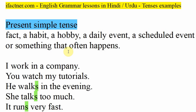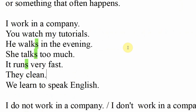Toh ab hum dekhtae hain kuch simple iske rules joh hum present simple tense ke liye use kertae hain. Present simple tense ek asaan tense hai - ismein verb ki aap first form use kertae hain. I, you, they, you people, we ke saad hum verb ki first form use kertae hain. Jabke he, she, it ke saad jo simple sentence hota hai, usmein hum verb mein 's' add ker dayta hain.